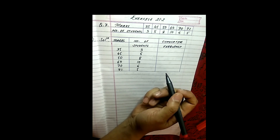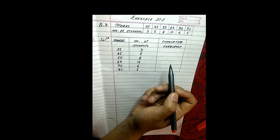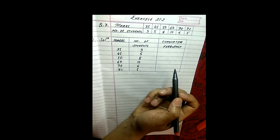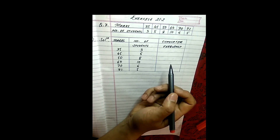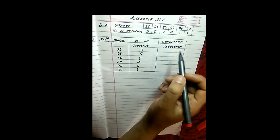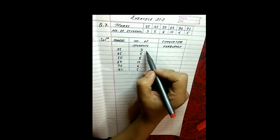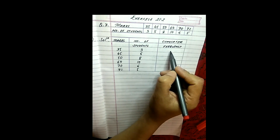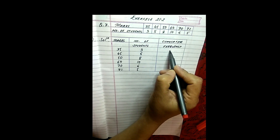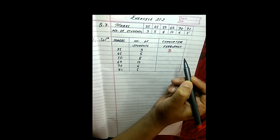What is cumulative frequency? Cumulative frequency is the frequency put together. Let us see how we find out the cumulative frequency. I will first write down the frequency, or the number of students of the first group, as it is.